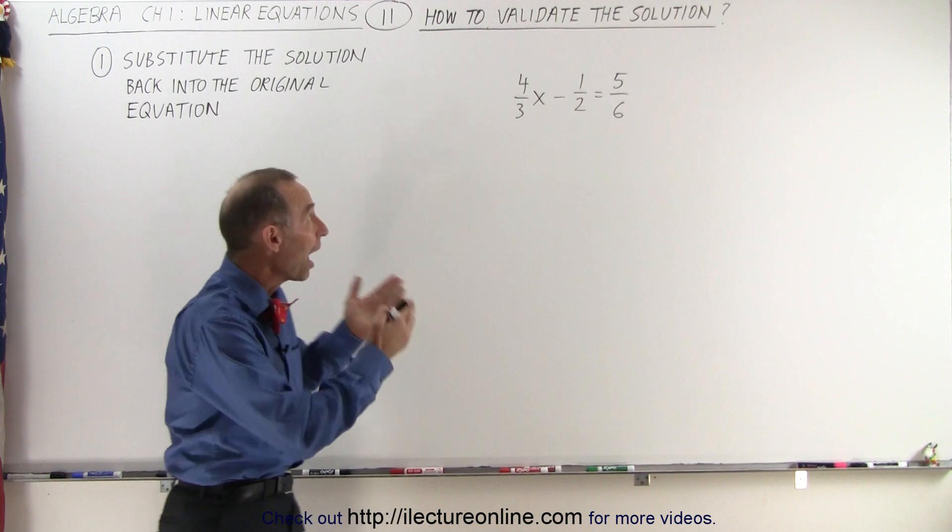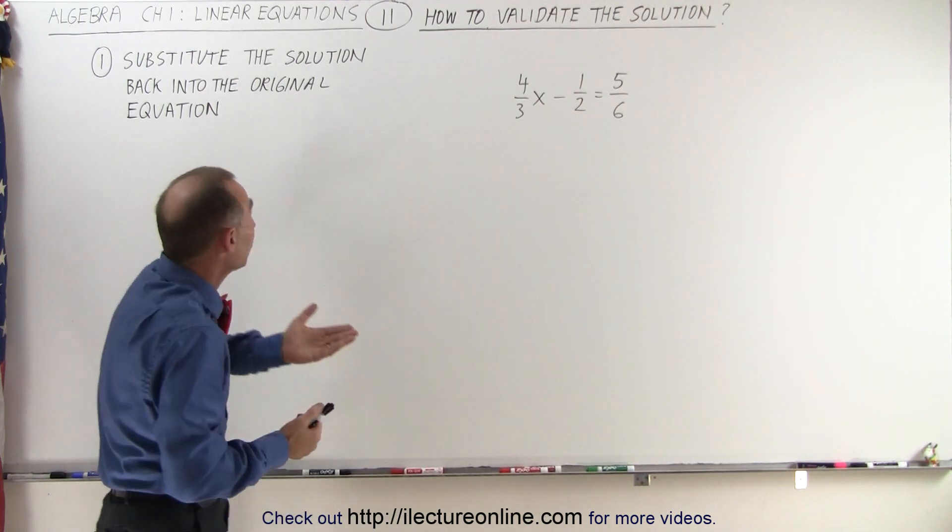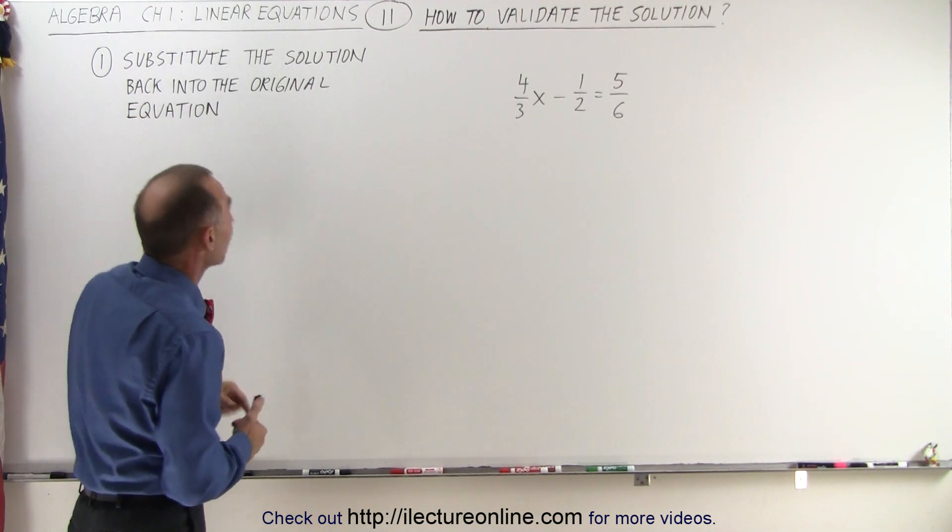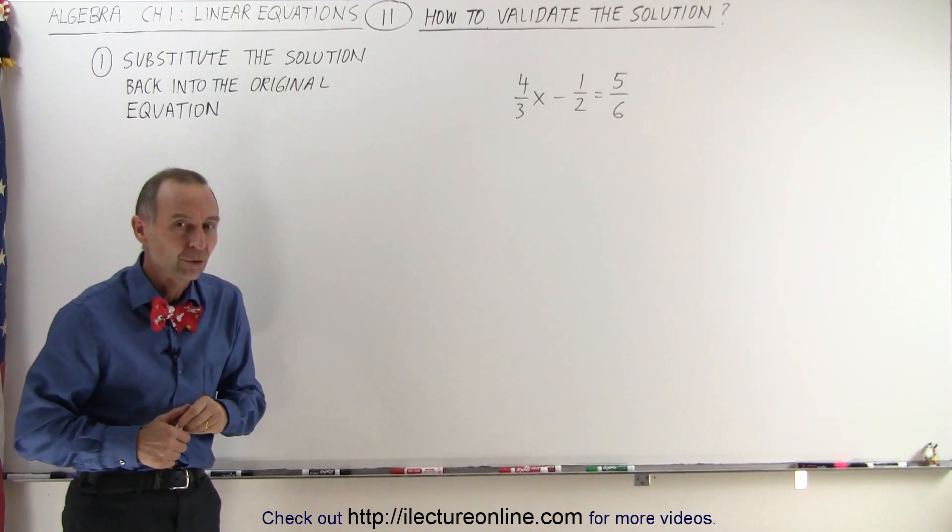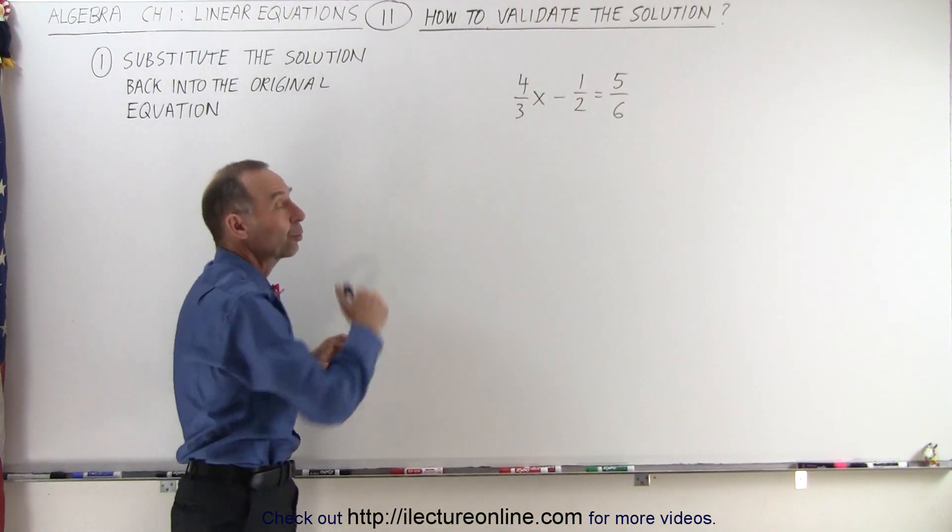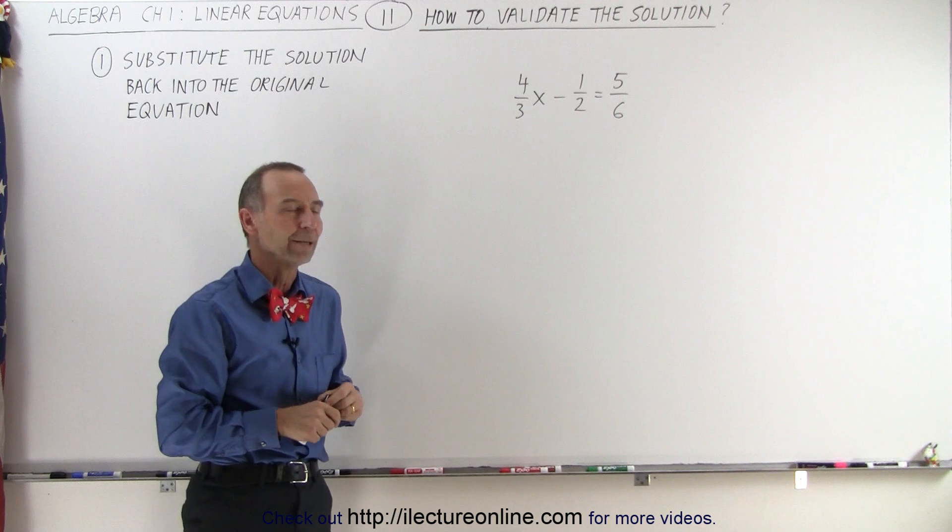So the question is, how do we validate the solution? The answer is we take the final solution and plug it back into the original equation. Whatever value we get for x, let's take that and plug it back in the original equation to see if the left side equals the right side.